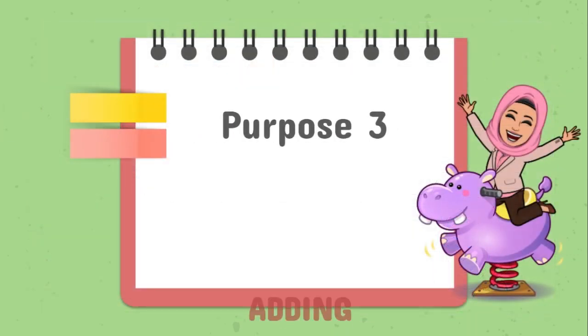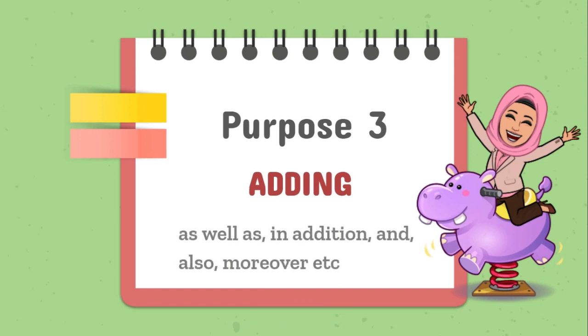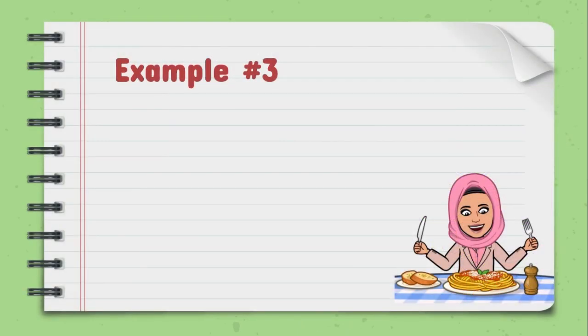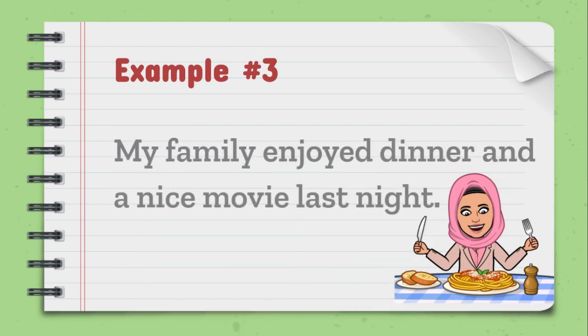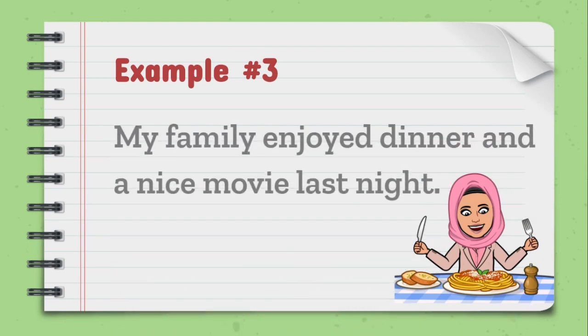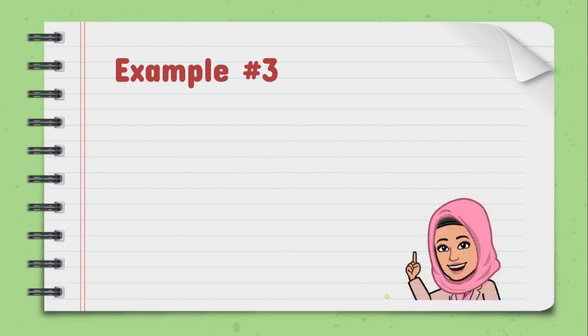Purpose number three is to add information. The connectives we use are as well as, in addition, and, also, moreover, etc. For example, my family enjoyed dinner and a nice movie last night.